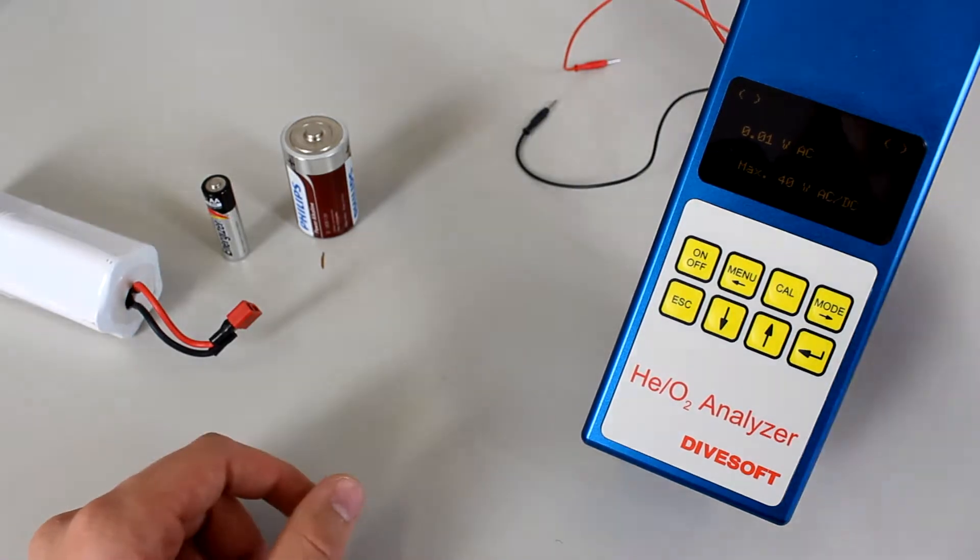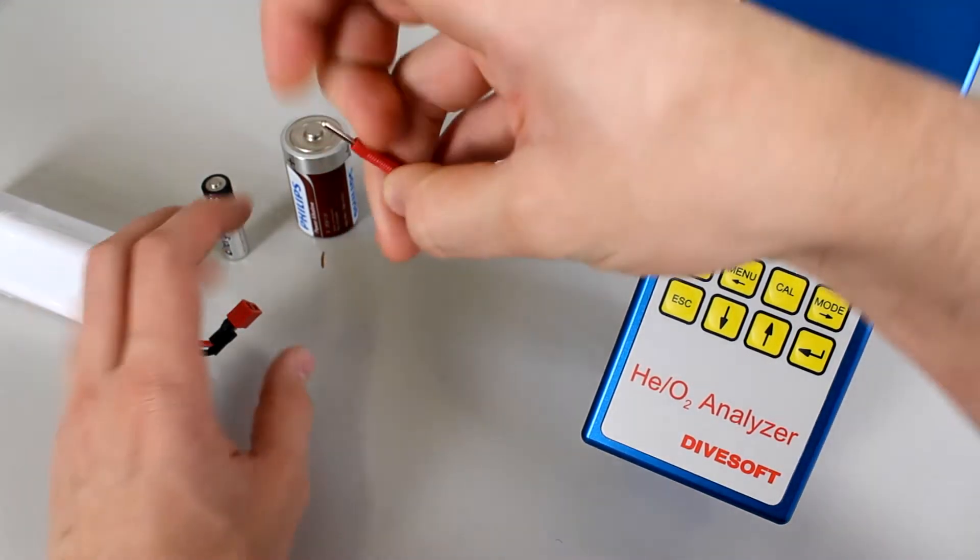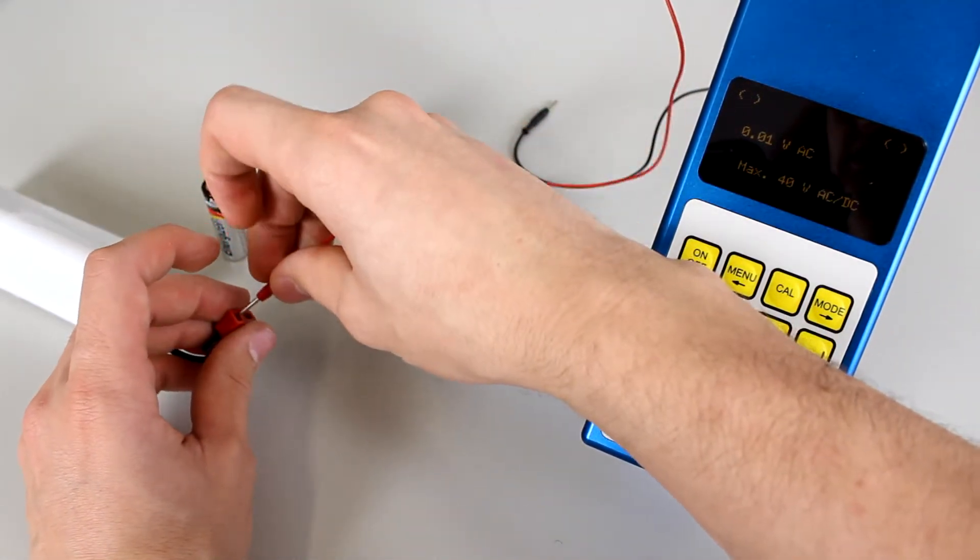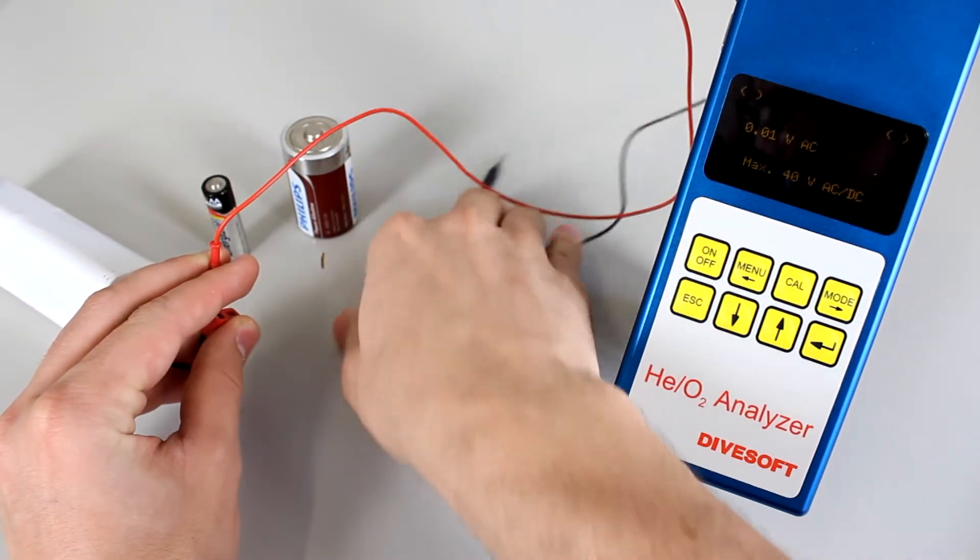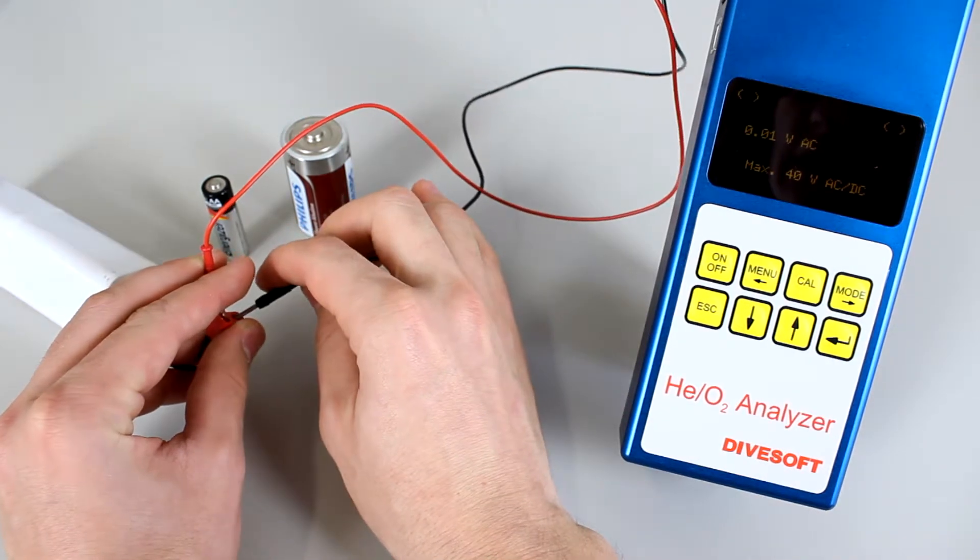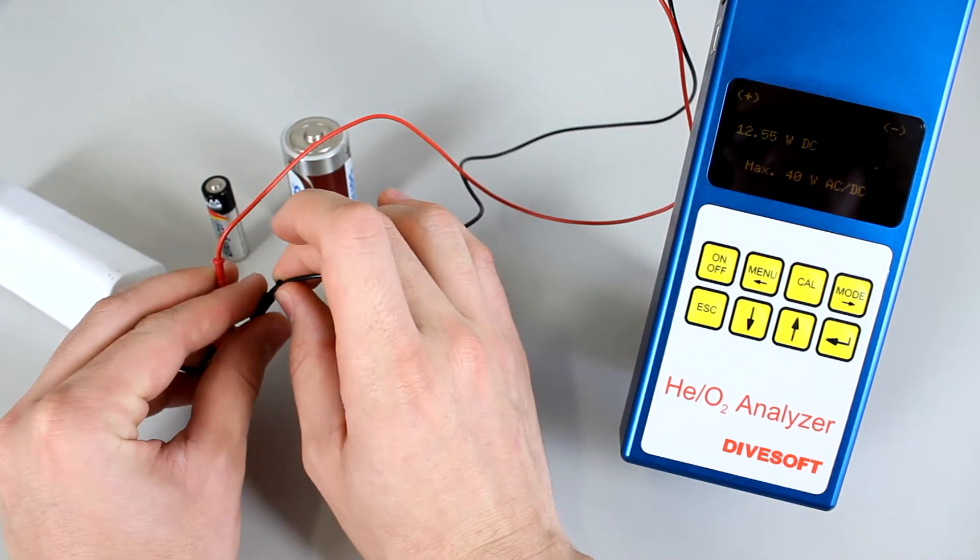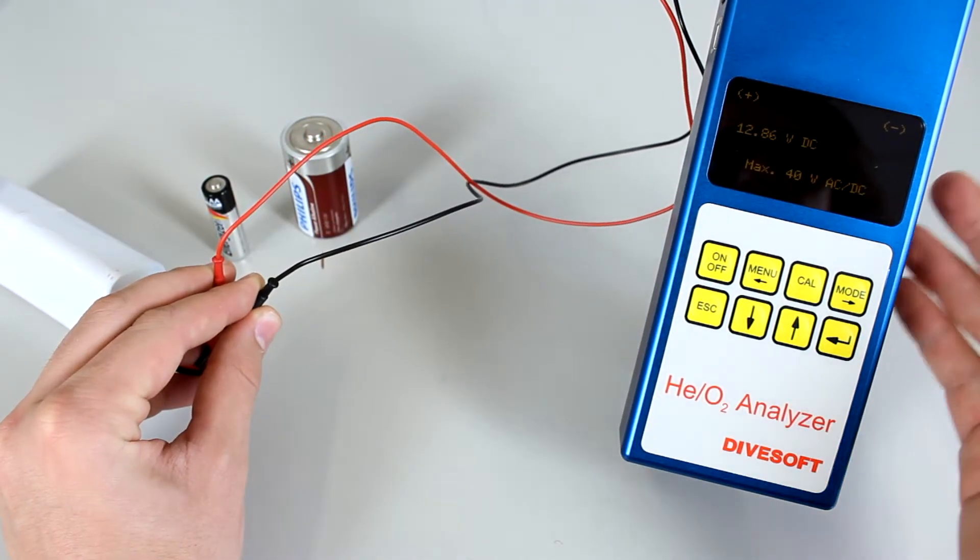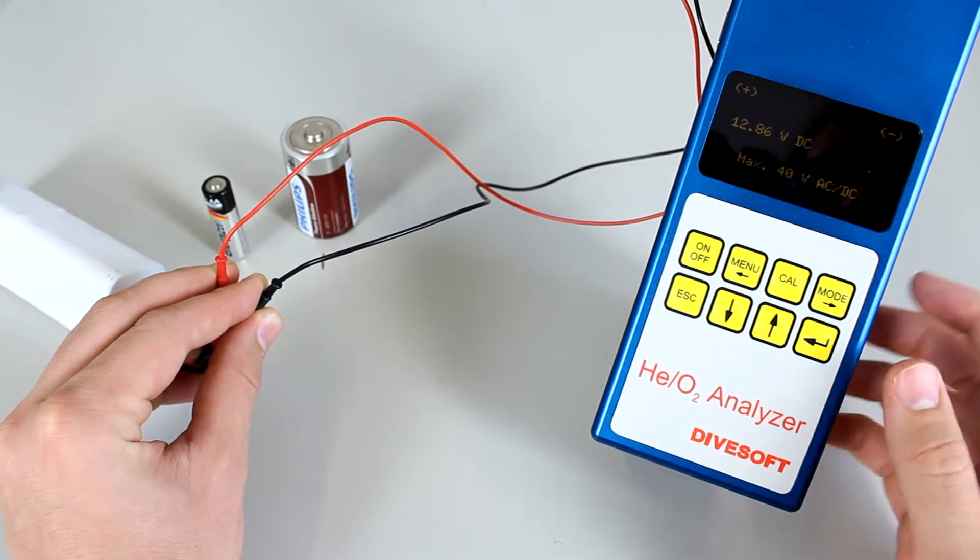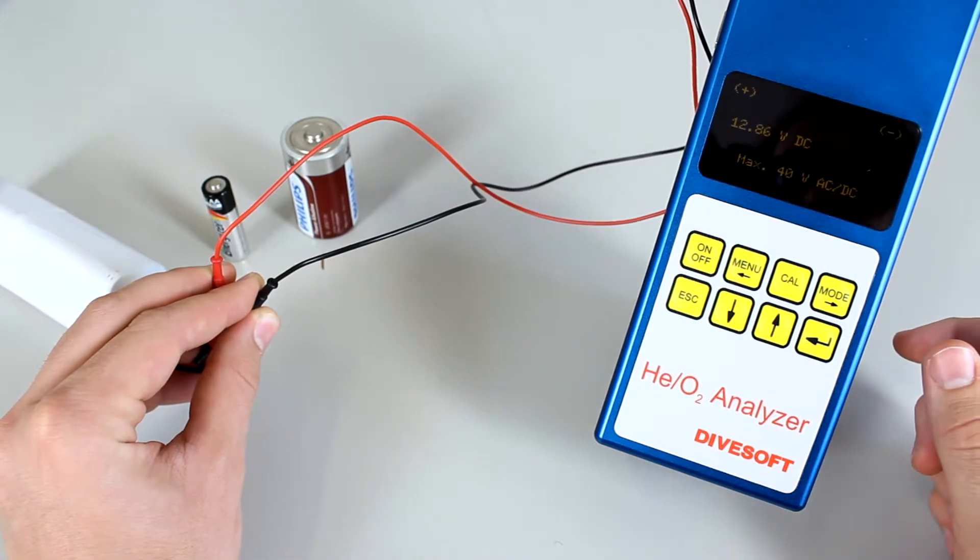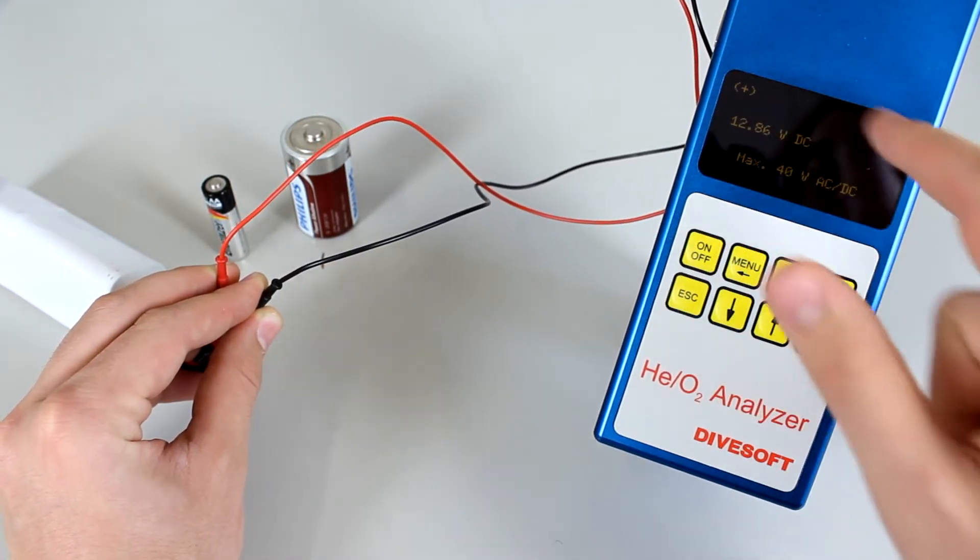When measuring any battery, take the red to the positive and black to the negative. You can see the readout on the display. Our voltmeter only measures up to 40 volts in AC and DC and it will display the type of current here and the polarity on the top.